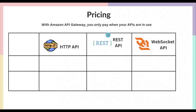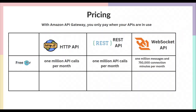The pricing model of Amazon API Gateway is essentially serverless — you only pay when your APIs are in use; you don't pay when no one is using them. Each of the three API types is priced differently. Under the free tier (available for 12 months on a new account), you get 1 million API calls per month free for both HTTP API and REST API, and for WebSocket you get 1 million messages and 750,000 connection minutes per month.